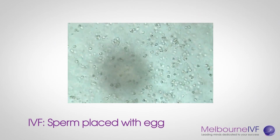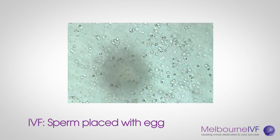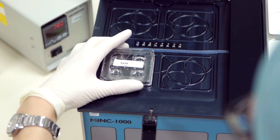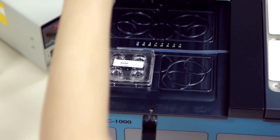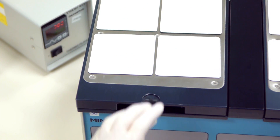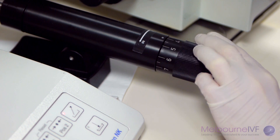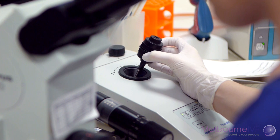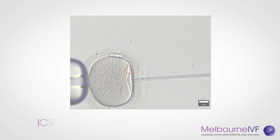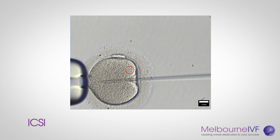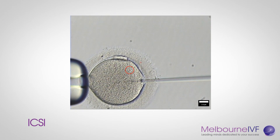With standard IVF, an egg is placed into a dish with a large number of sperm, then left overnight in an incubator to fertilise. However, in many cases your fertility specialist will recommend ICSI. With ICSI, a single sperm is directly injected into each egg using special scientific equipment. As the egg is one-tenth of a millimetre in diameter and the sperm many times smaller, an embryologist performs this delicate procedure under the microscope.